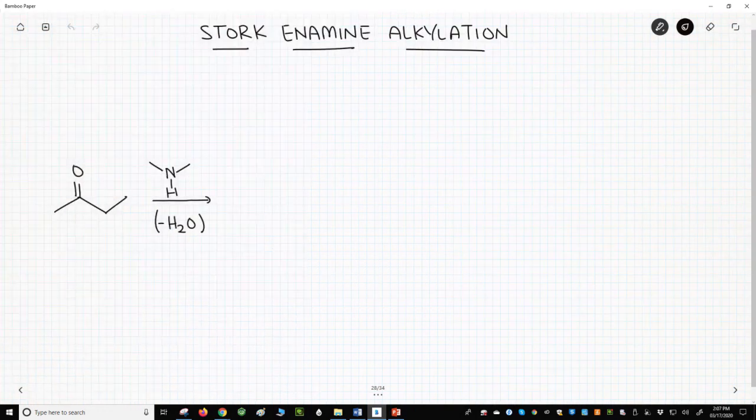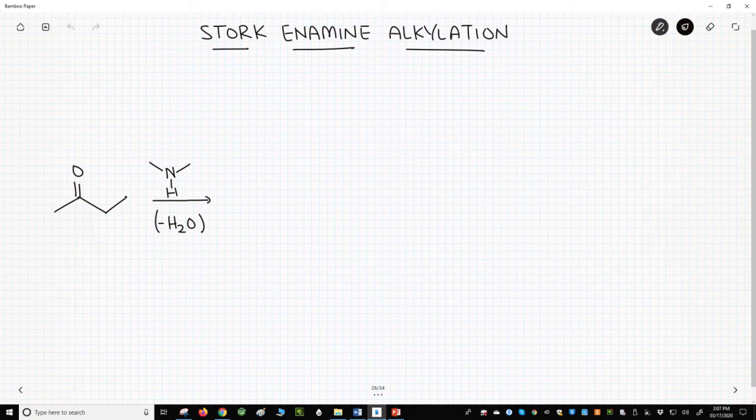To the far left is a ketone and we want to alkylate it. Let's say we want to put an ethyl on the alpha carbon. So let's take the ketone and react it with a secondary amine, something simple like dimethylamine.